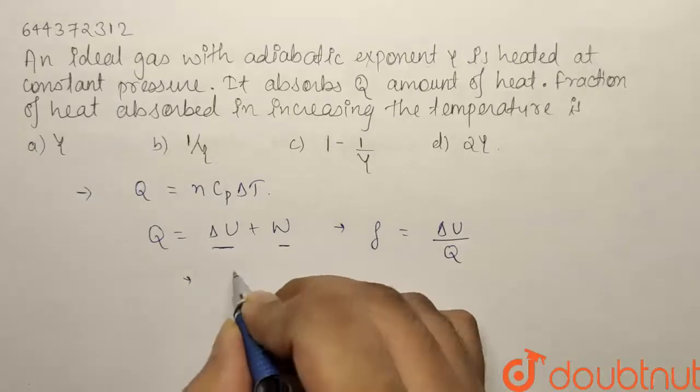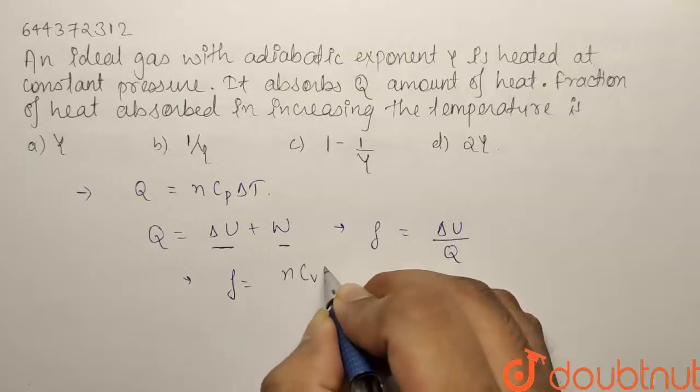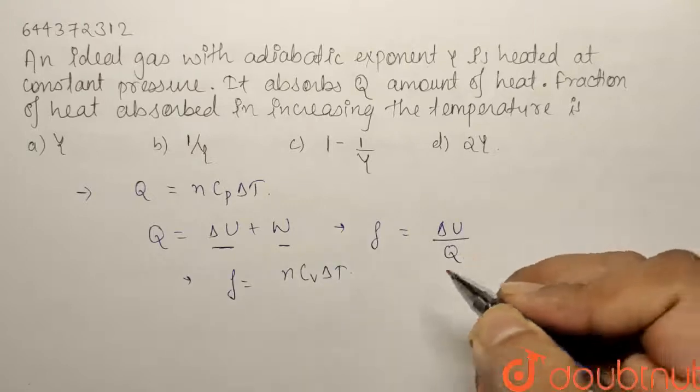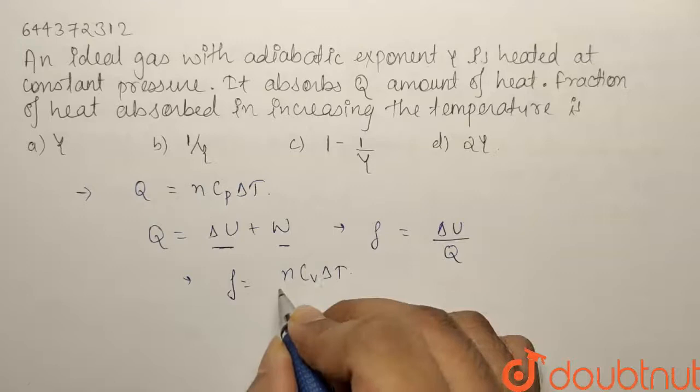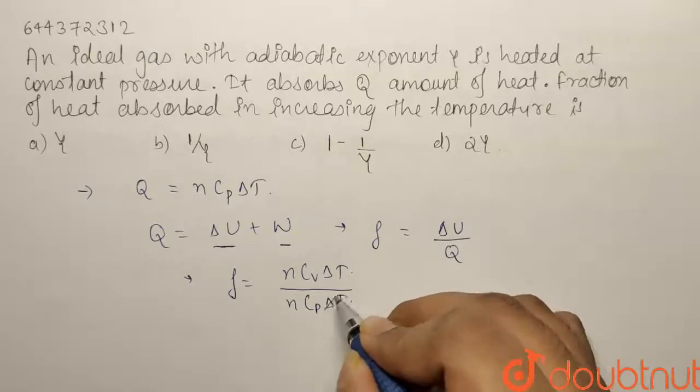So this fraction F comes out to be equal to ΔU. Q we know is nCvΔT, and we know that for the given process, that is constant pressure process, Q equals nCpΔT. So canceling ΔT, what we get is that our fraction comes out to be equal to Cv by Cp.